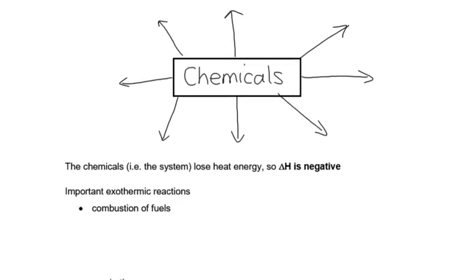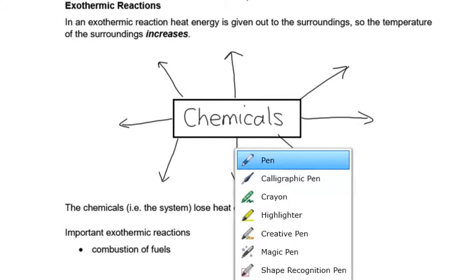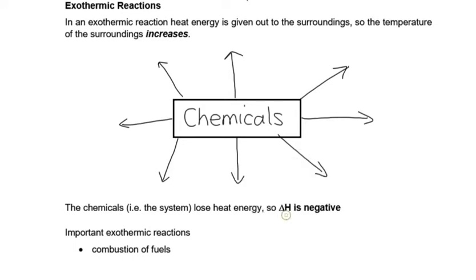The chemicals themselves must be losing this energy. All these arrows pointing out from the chemicals - the chemicals are losing energy. So we will find that our value for delta H is going to be negative. So although the temperature goes up, the chemicals go down because there's this transfer of energy. The chemicals lose it so the temperature of the surroundings can go up.